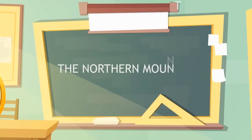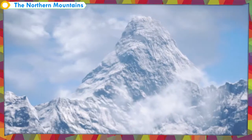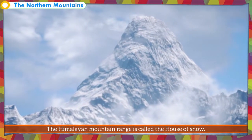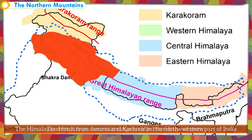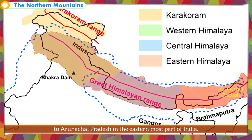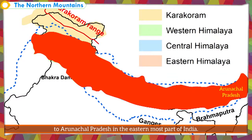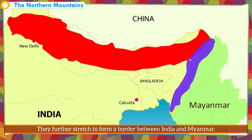The Northern Mountains. The Himalayan mountain range is called the House of Snow. The Himalayas stretch from Jammu and Kashmir in the northwestern part of India to Arunachal Pradesh in the easternmost part of India. They further stretch to form a border between India and Myanmar. This part of the Himalayan range is known as Purwanchal Himalayas.